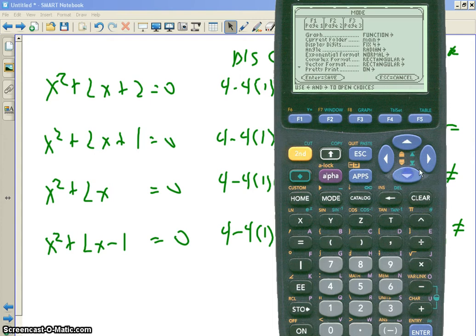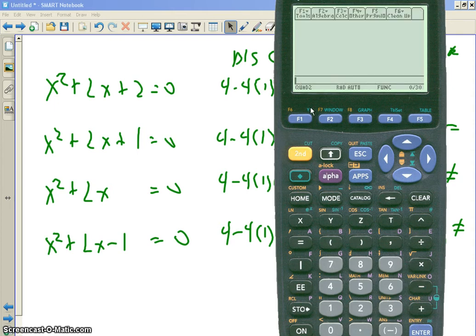and you go down here to current folder, and right arrow, and you select the one you want. The one you created. I created this one. Hit enter twice. Now you're in quad 2. So everything you do is in quad 2.